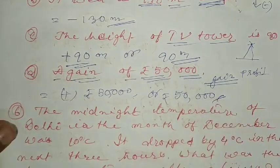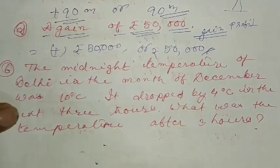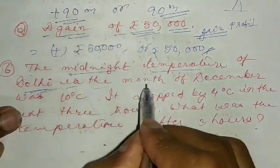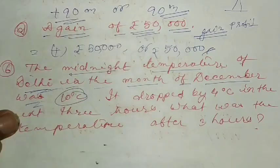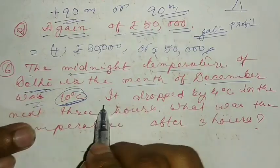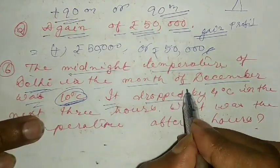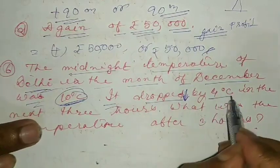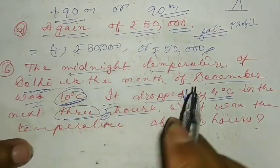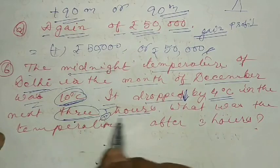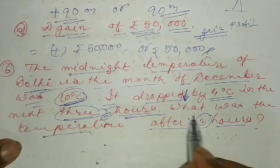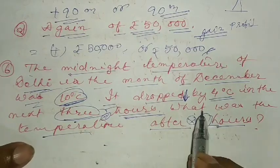Now we move to question number six. What is the midnight temperature of Delhi? In the month of December it was 10 degrees Celsius, and it dropped by 4 degrees Celsius in the next three hours. We just need to calculate the degree.